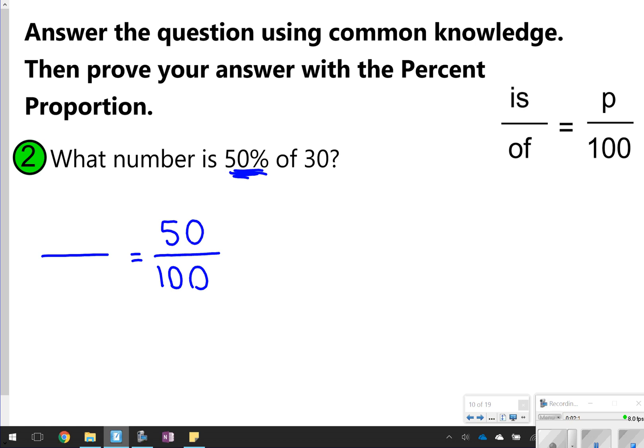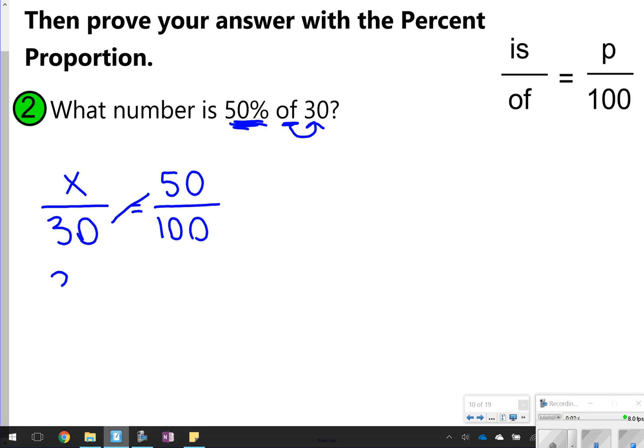I'm starting you off with an easier one so that you can see how the percent proportion works. The first thing you're always going to do is put 100 here at the bottom. And then you start to fill in the information you know. I can already tell that 50% will go above 50 because that's the percent.